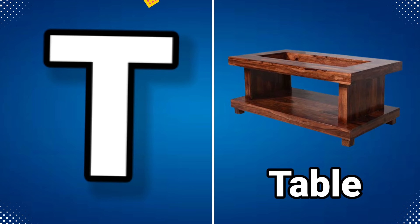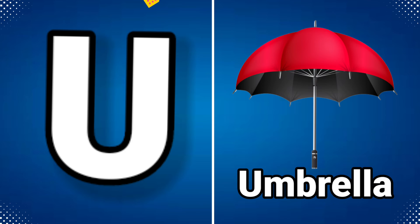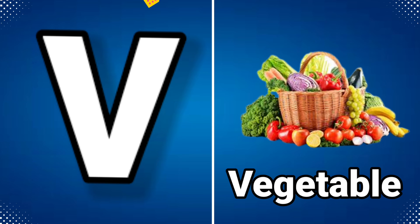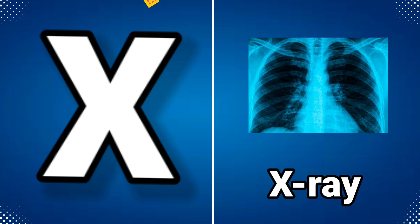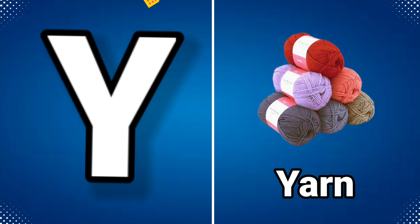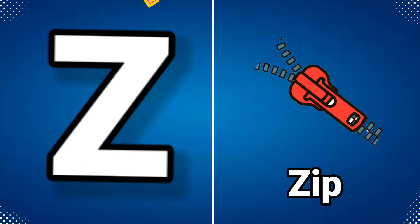T for table, U for umbrella, V for vegetable, W for watch, X for x-ray, Y for yarn, Z for jeep.